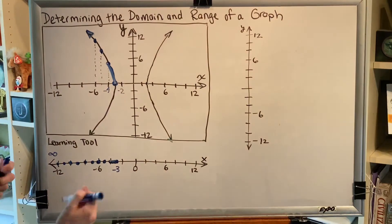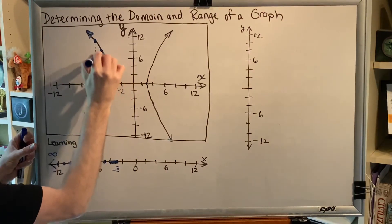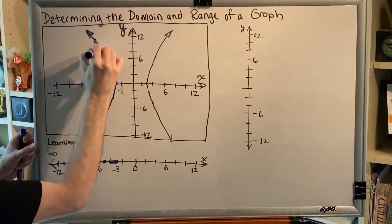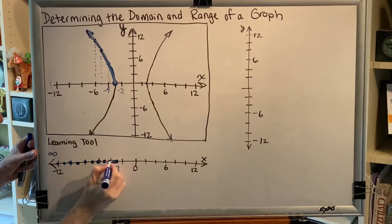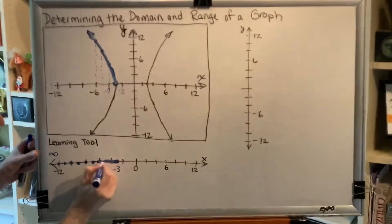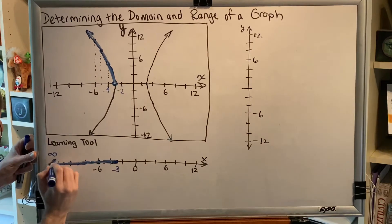And in fact, this idea should be applied to all of the points. Between here and here, there are an infinite number. Between here and here, there are an infinite number. Between here and there, there are an infinite number. And what we find is that we end up shading the entire number line that is in between all of these dots.